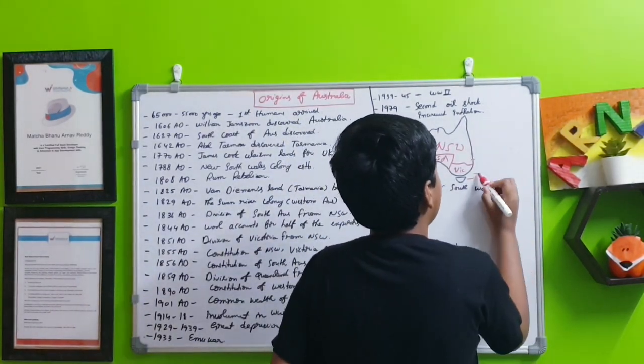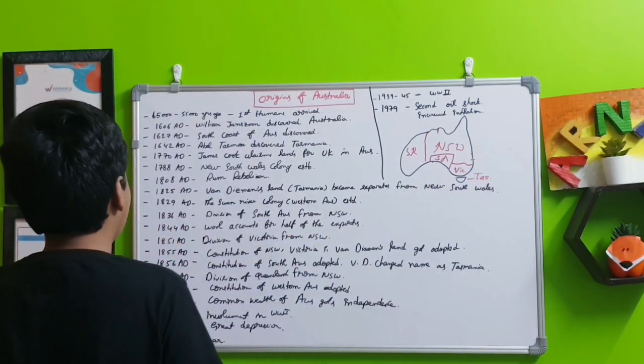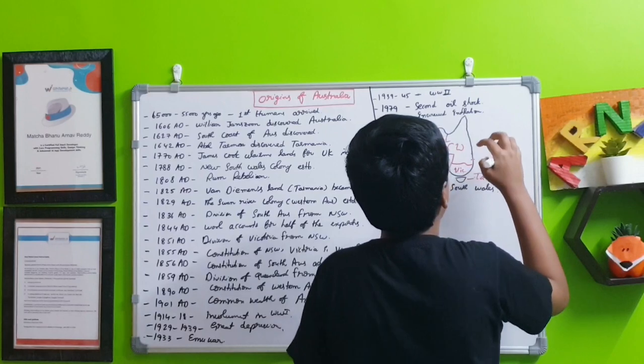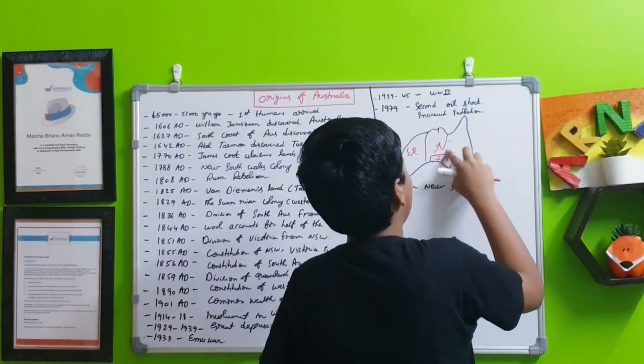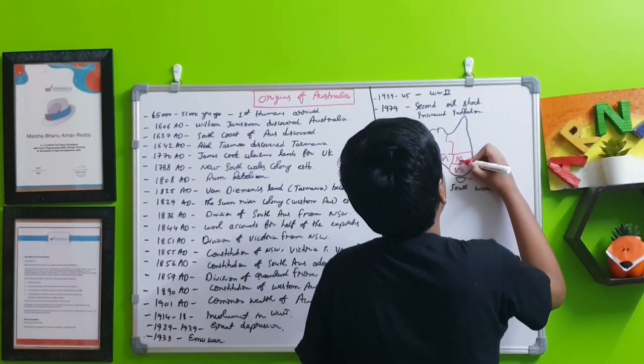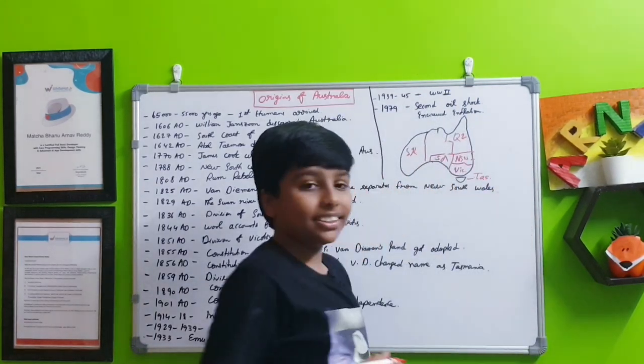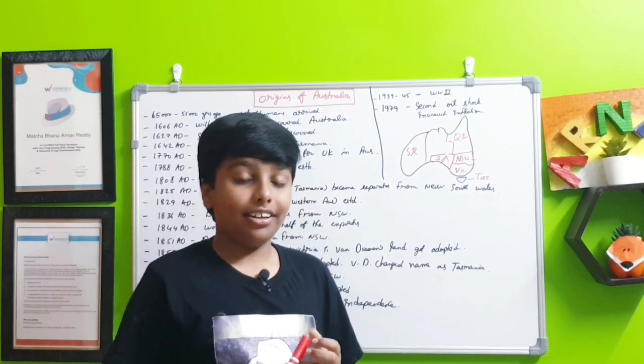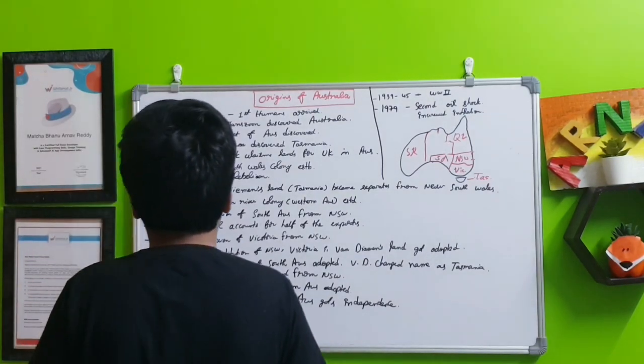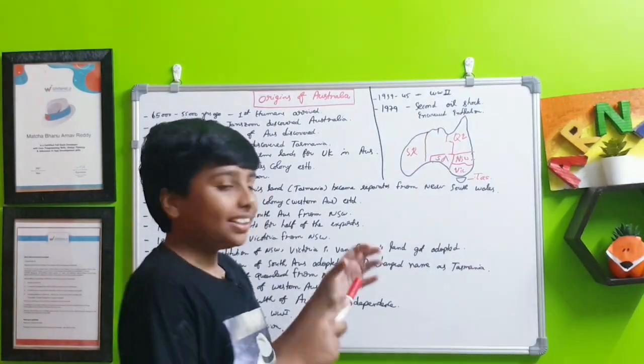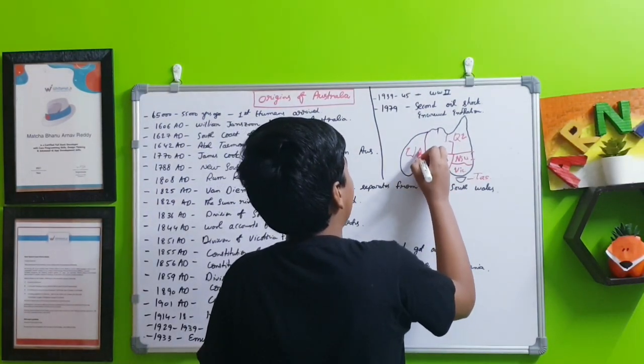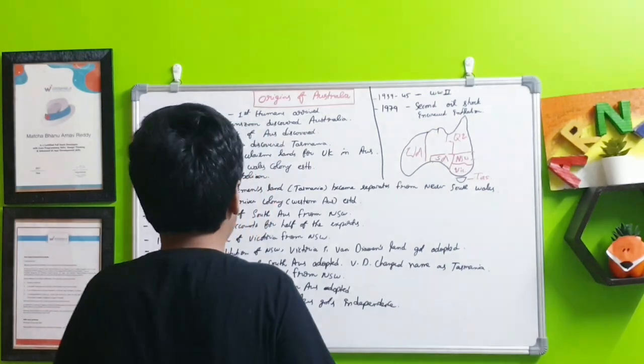In 1859 AD, the division of Queensland from New South Wales happened and New South Wales started to collapse. Queensland already after it turned into a separate colony got its own constitution and autonomy. In 1890 the constitution of Western Australia is adopted. By this time the Swan River colony changed its name to Western Australia and they also got autonomy.